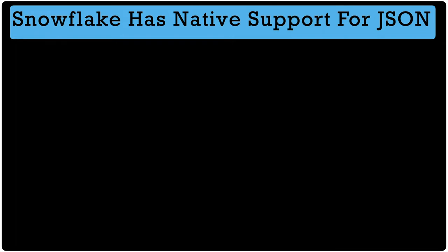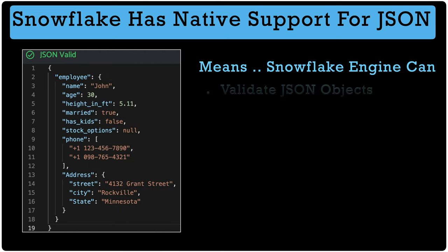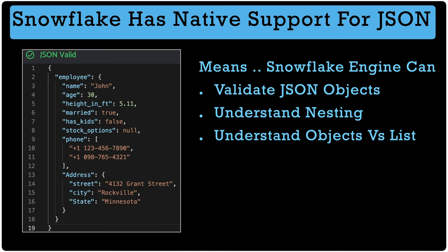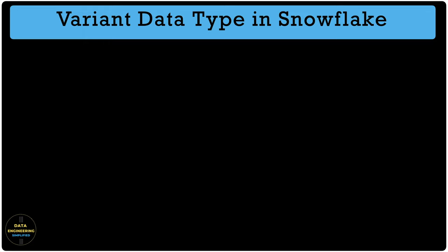When Snowflake says it has native support for JSON, it means it can validate JSON objects, understand nesting and deep nesting, understand object versus ordered list structure, understand data types within JSON, and parse and query it similar to a table structure with special notations and functions. Now let's understand the variant data type and its role in Snowflake when it comes to JSON objects.